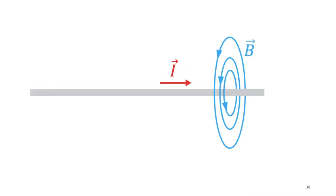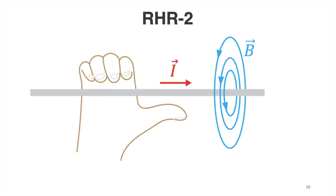Next, we discuss the right-hand rule number two or the second right-hand rule. The second right-hand rule is used to determine the direction of the resulting magnetic field due to a moving charge or current.